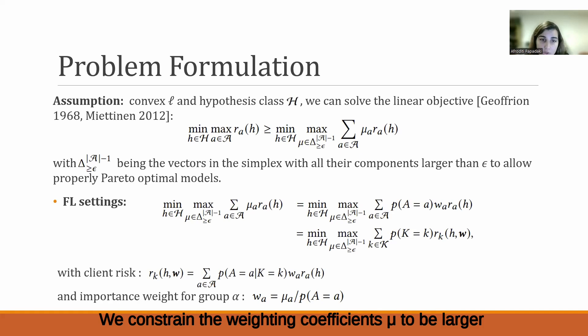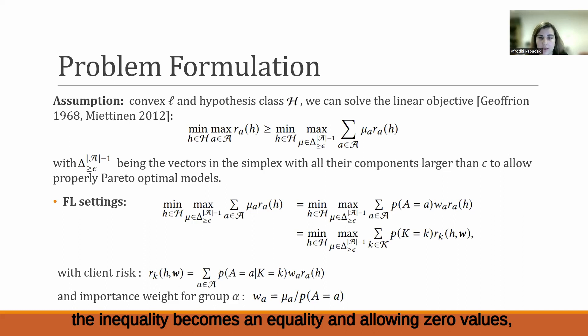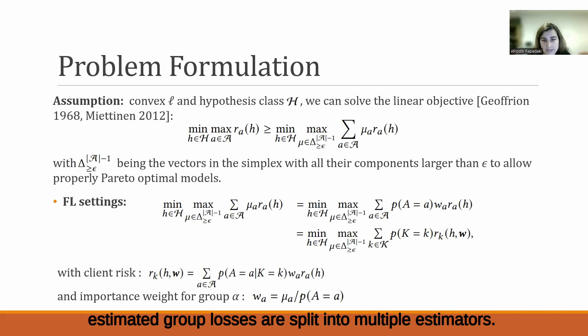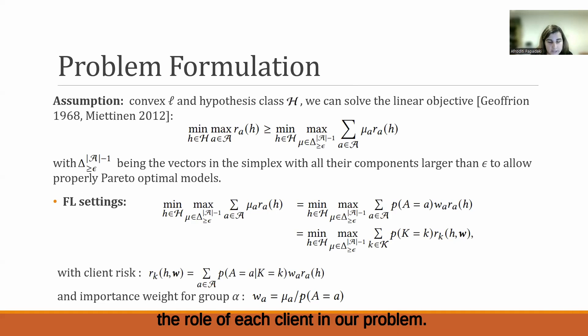We constrain the weighting coefficients mu to be larger than epsilon to allow properly Pareto optimal solutions. If we let epsilon equal to zero, then the inequality becomes an equality, and allowing zero values may lead to models that are weakly Pareto optimal instead. We transform this objective into a problem where the estimated group losses are split into multiple estimators associated with clients, and we use importance weights to incorporate the role of each client in our problem.